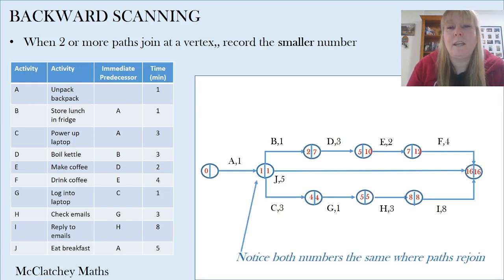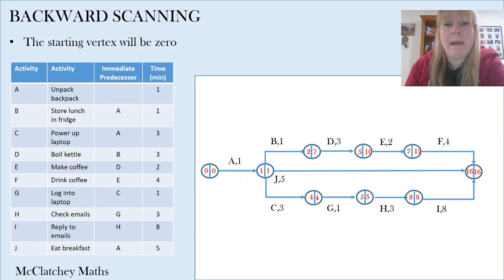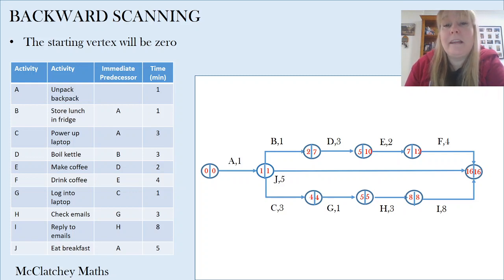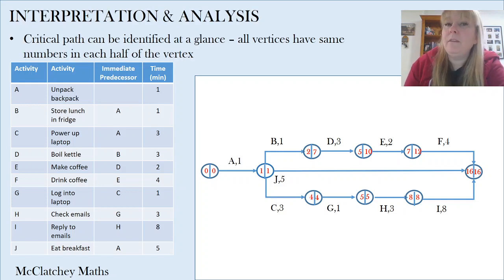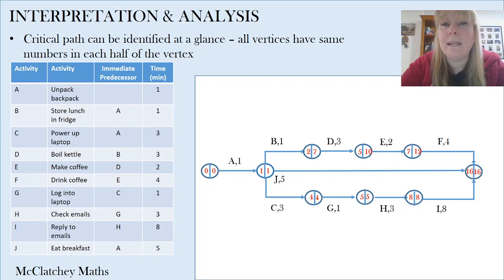As a quick shortcut after backwards scanning, anything on the critical path — if you know what the critical path is — you can just make sure the numbers on the left and right-hand side are the same all the way along from start to finish. Then all you need to think about are the remaining activities on any other pathways. Also, if you're given a network that's already been forward and backward scanned, you can identify the critical path at a glance: it's the one where the vertex numbers are the same on both sides. Just look for those matching vertices.